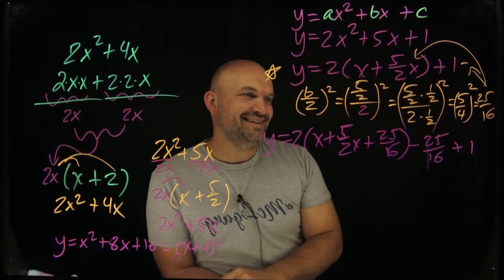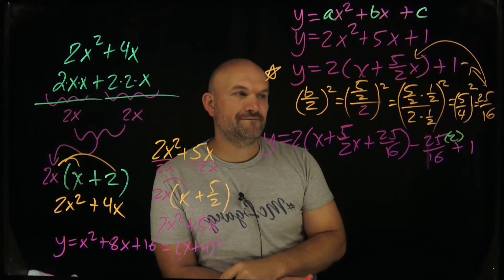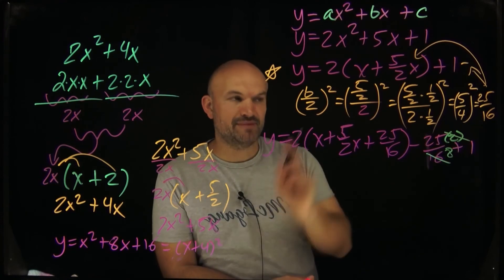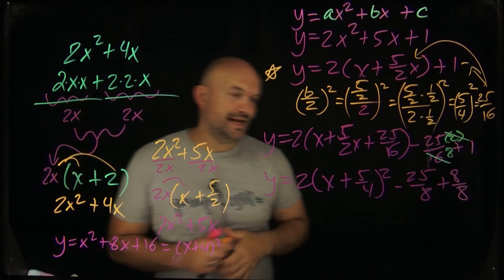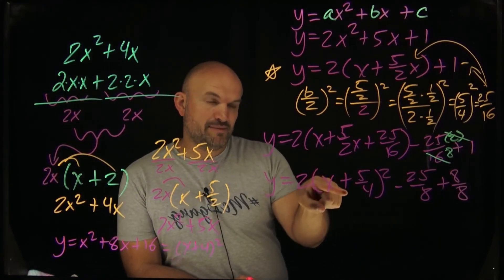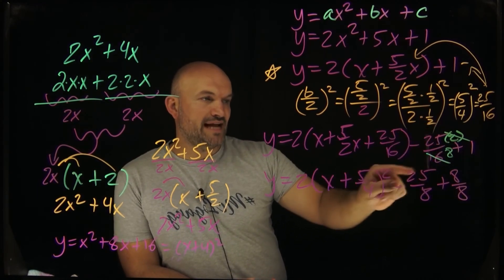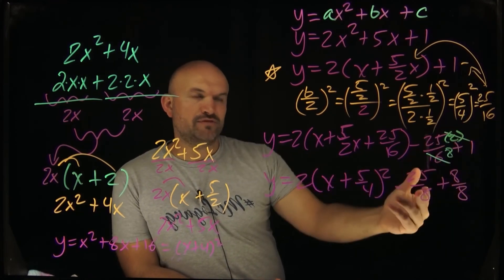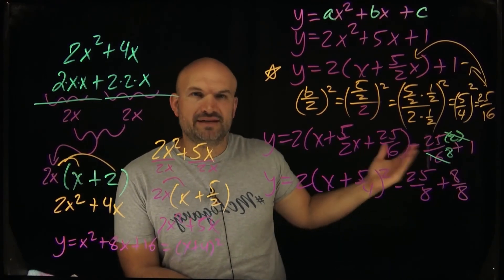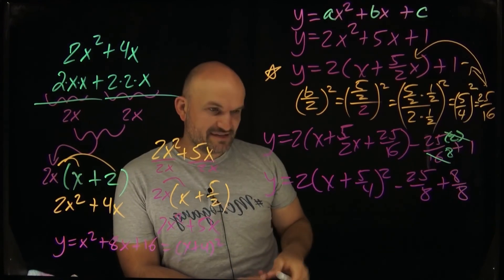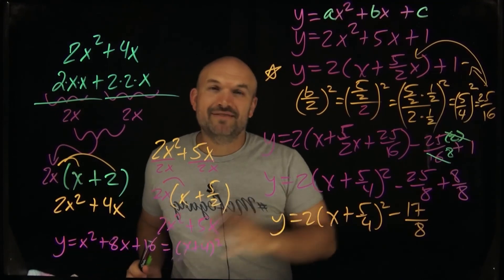Now here's an important correction — you added 25/16 inside the parentheses, but that whole thing is being multiplied by 2, so you actually added 2 times 25/16 outside. That means you must subtract 25/8 outside as well. Then rewrite 1 as 8/8 so everything has a common denominator of 8. Adding −25/8 + 8/8 gives −17/8. So the final answer is y = 2(x + 5/4)² − 17/8. If you need a more simplified step-by-step version, check out the next video.